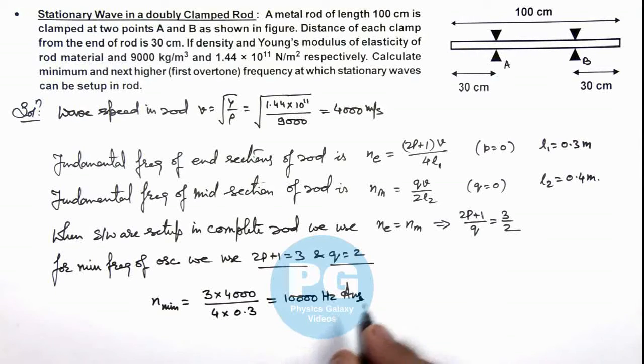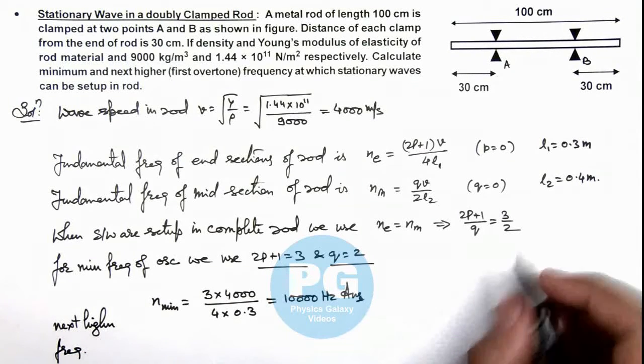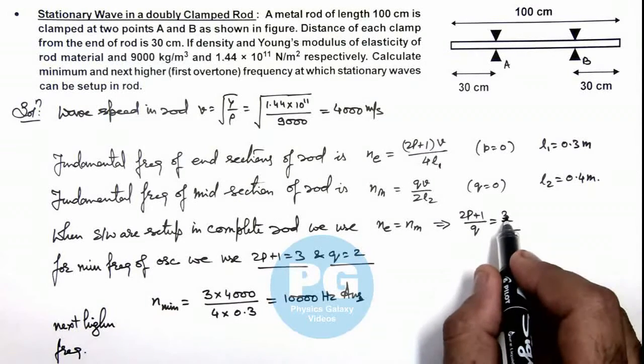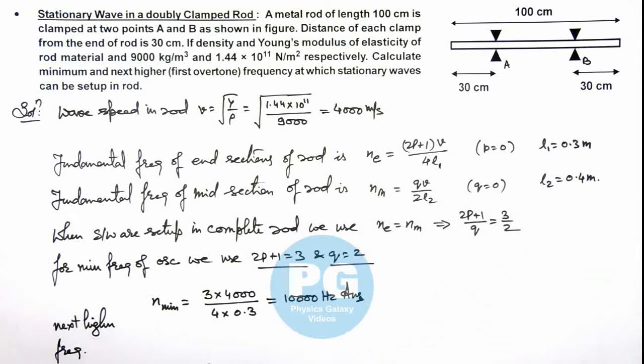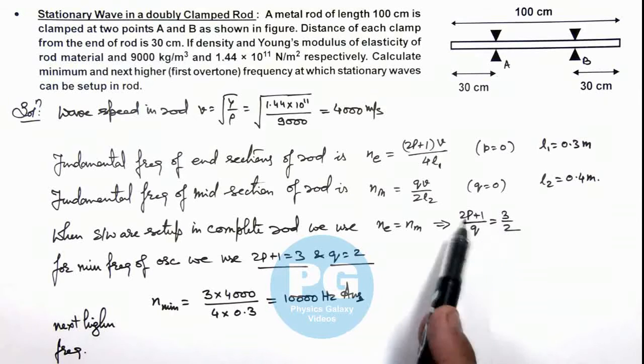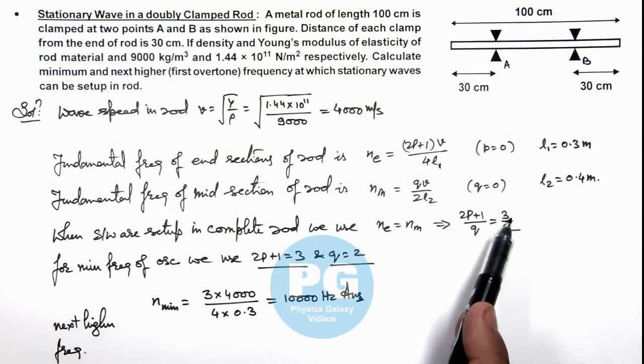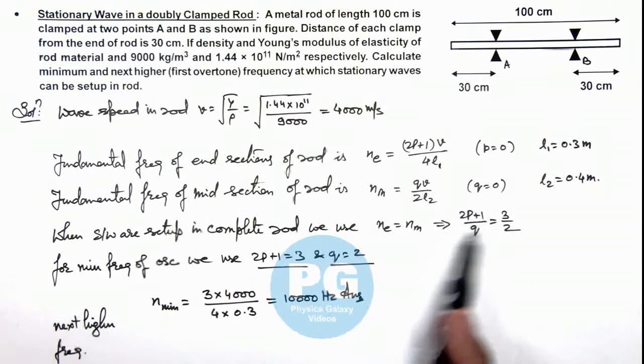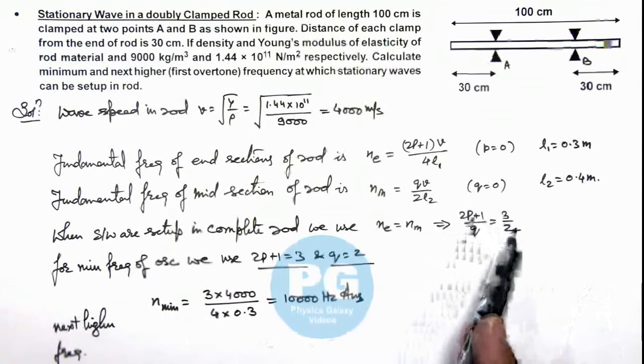And if we calculate the next higher frequency, next higher frequency will be one when 2p + 1 is equal to 9 and q is equal to 6. Because if we consider its second multiple, 2p + 1 will become an even integer—that's not possible. So next odd integer of value of 2p + 1 when this ratio will take place is...